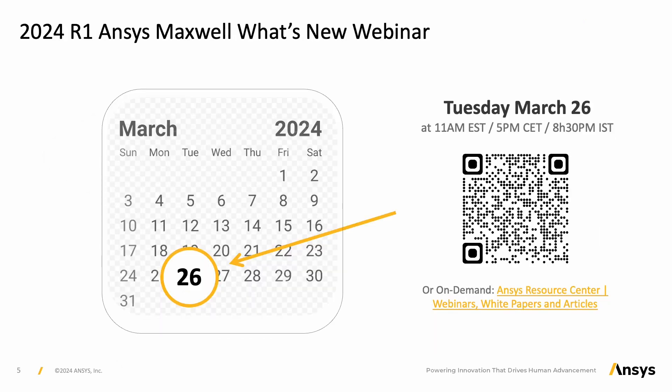The new capabilities of ANSYS Maxwell will be presented in a webinar on March 26, 2024, at 11 a.m. EST and 5 p.m. CET. You can register by scanning the QR code. If you missed this webinar, you can watch it on demand by going to the ANSYS Resource Centre and searching for ANSYS 2024 R1 ANSYS Maxwell What's New.